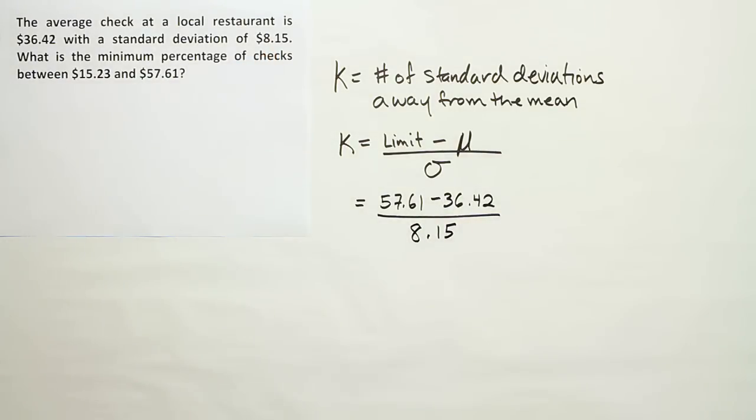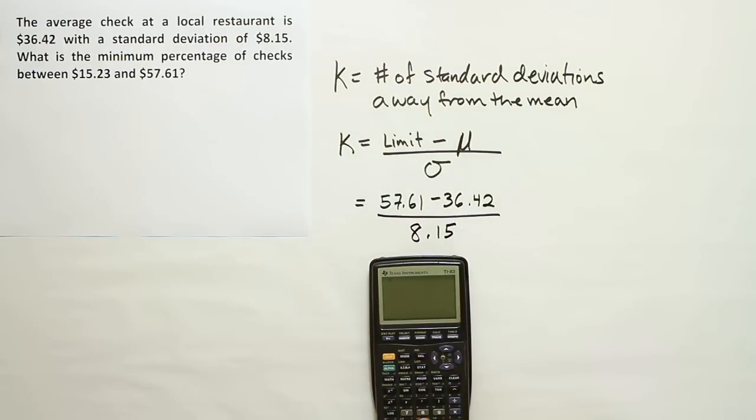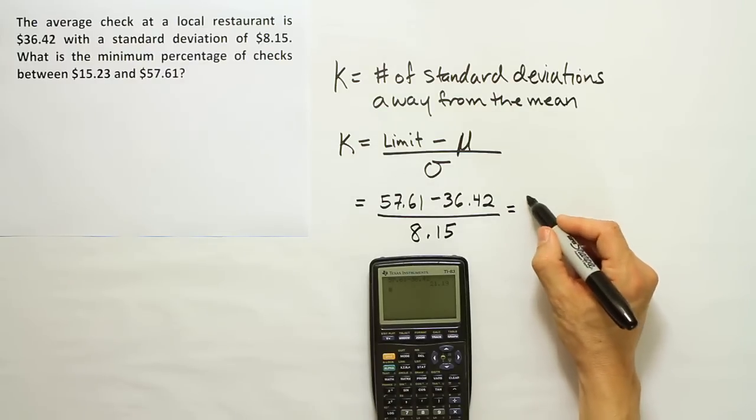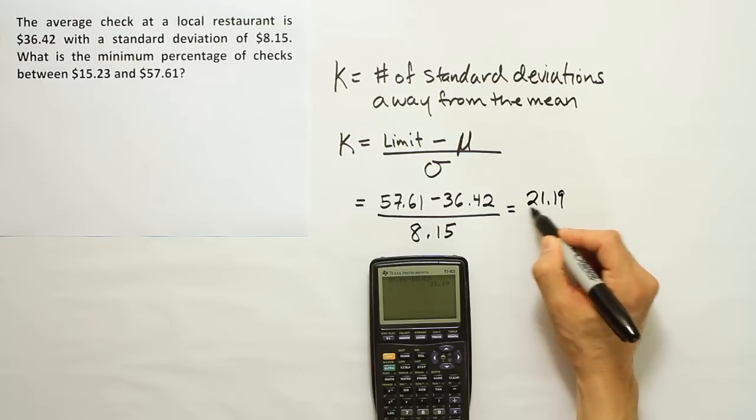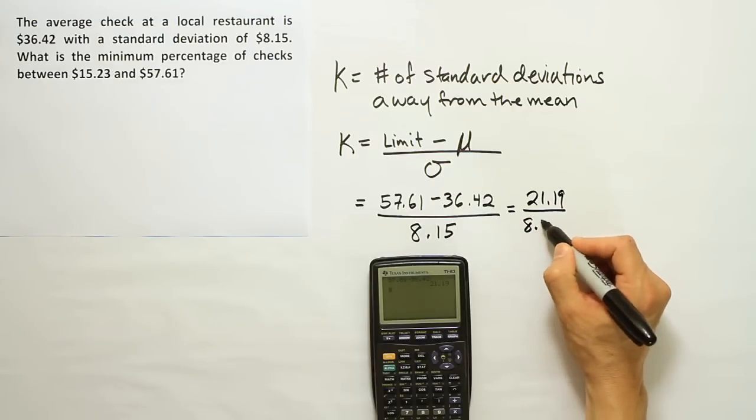And if I work out that with my calculator, I'll end up with 57.61 minus 36.42. When I do that, I get a difference on top of 21.19 and I'll divide that by 8.15.